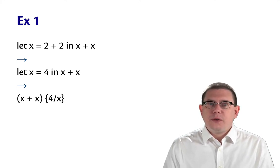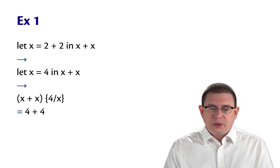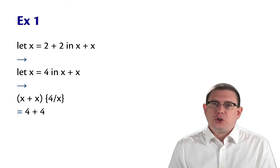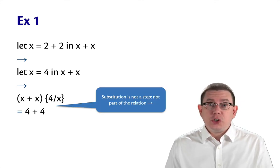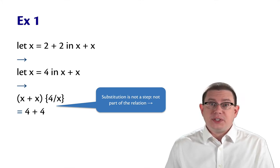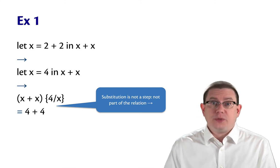We would take the body expression and substitute 4 for x in it. Now, intuitively, what we want to have happen there is both of those occurrences of x get replaced by 4. So I'm going to write that that's equal to 4 plus 4 after doing the substitution. Notice that substitution here is not a step. It's not part of the single step relation. We're just treating these two expressions as equivalent, essentially.